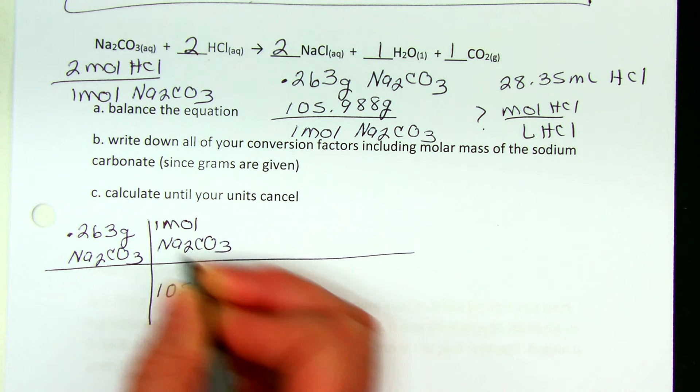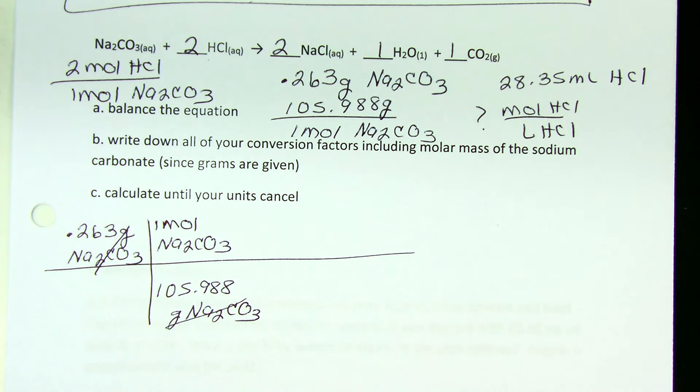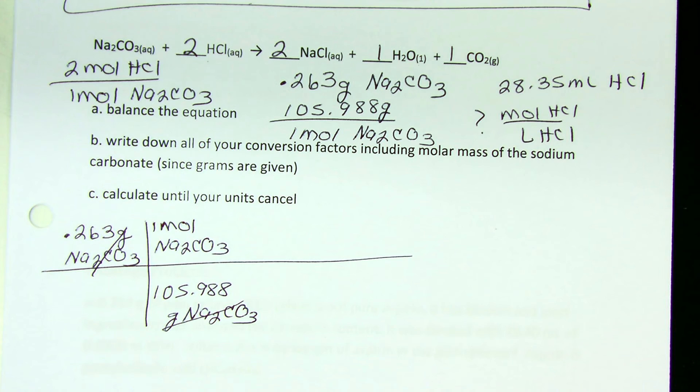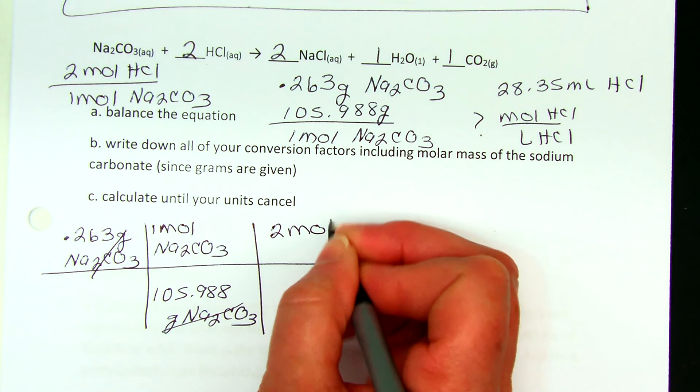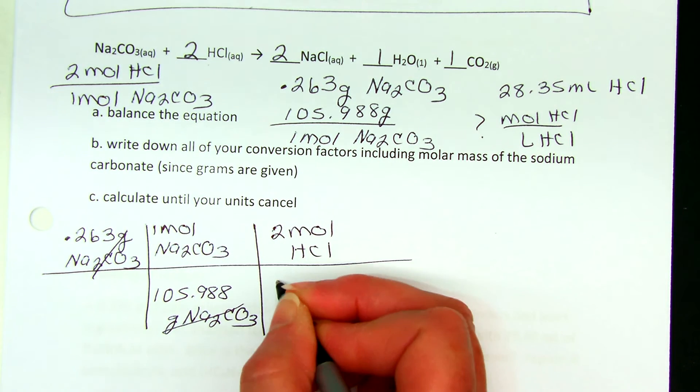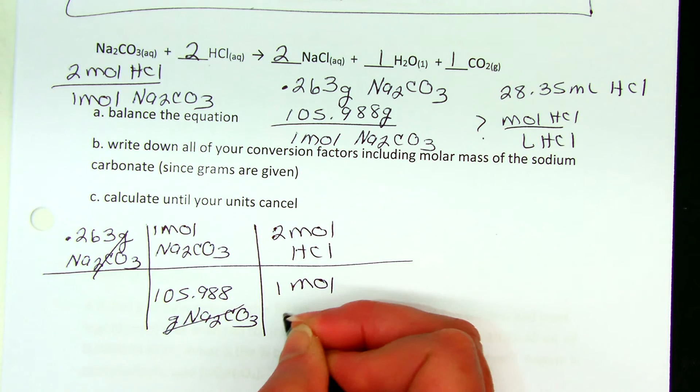So now the units I have are moles. Now what? Mole ratio: two moles of HCl per one mole of sodium carbonate.